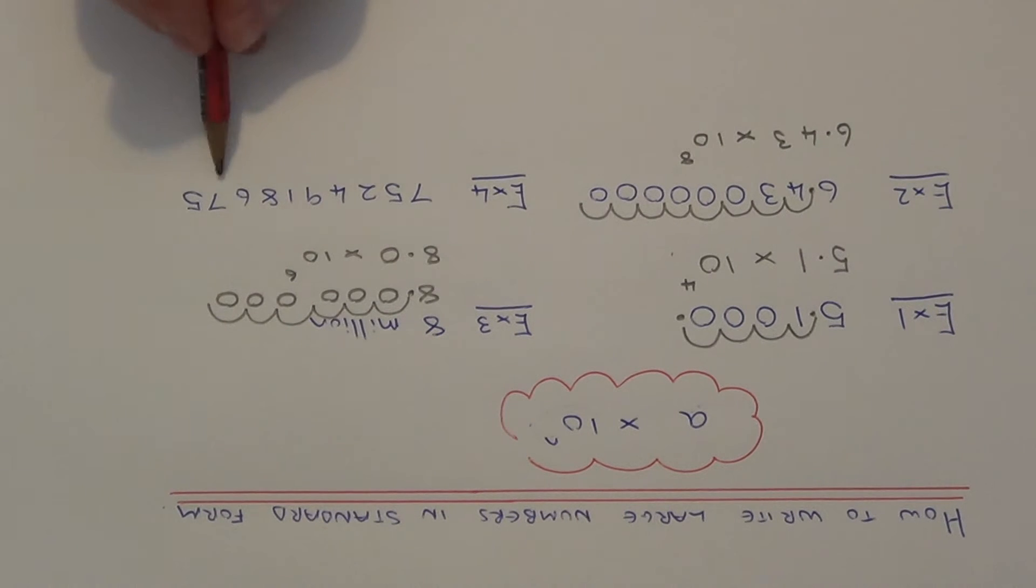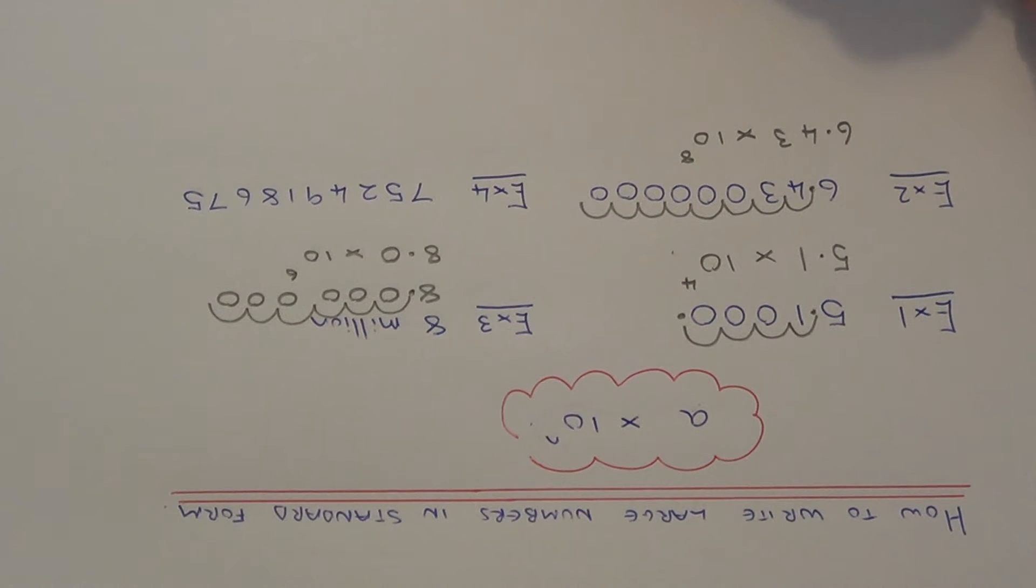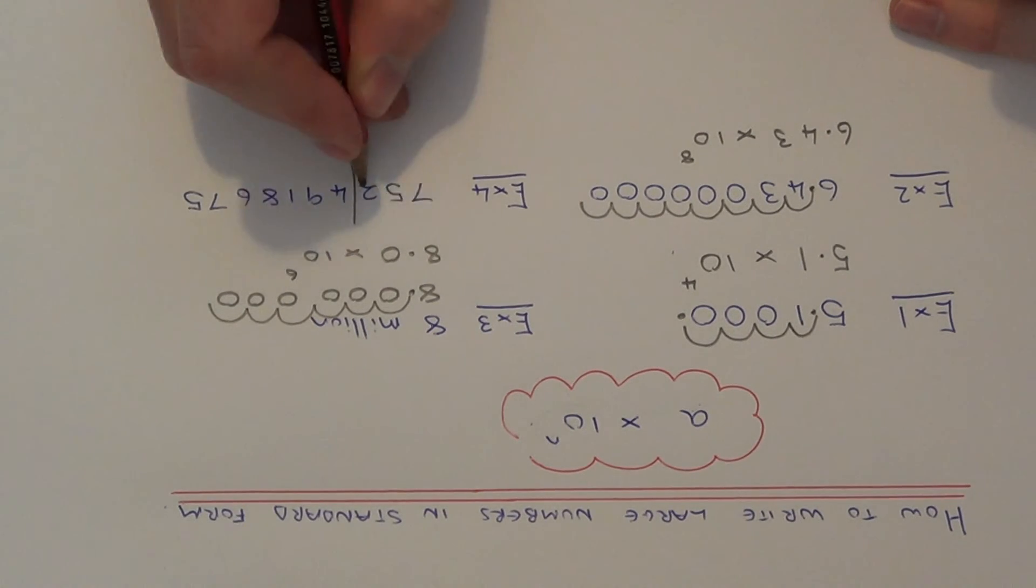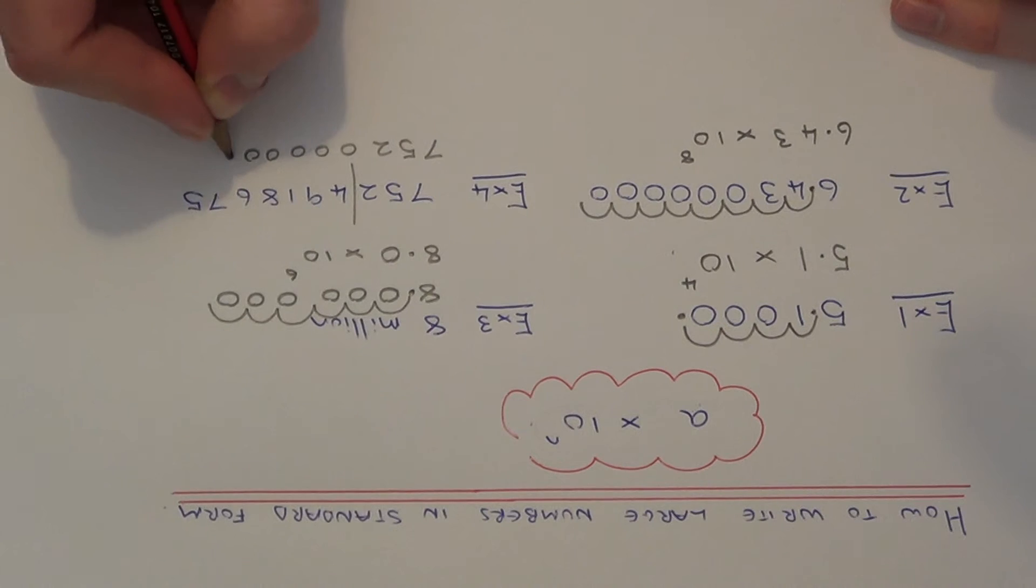So we've got one final example. We've got another number here, but this number doesn't contain many zeros. So what we need to do before we put it in standard index form is just to round this number off. I'm going to round it off to three significant figures. So if we round it off to three sig figs, that's three numbers from the start, we get 752,000,000.